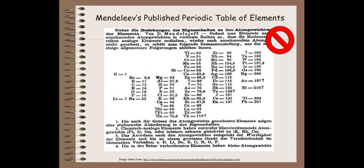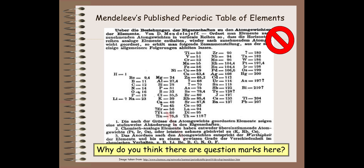Mendeleev created his own periodic table — this is the table he originally set up, and you can see that it is in German. You can see elements like hydrogen, lithium, sodium, beryllium, boron, carbon, nitrogen, oxygen, and fluorine. His groupings run across the table. You'll also notice that there are question marks — gaps or holes in his table. Why do you think these question marks are there?